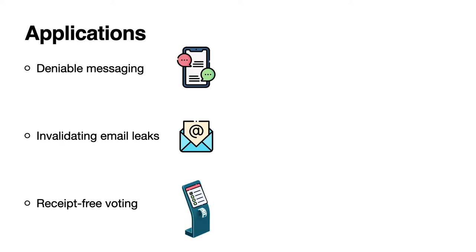In our paper, we describe three applications of our new primitives. For short-lived signatures, we use them in deniable messaging, emails, and in invalidating email leaks. Short-lived zero-knowledge proofs can be used in electronic voting systems to get an interesting property called receipt-freeness.